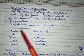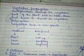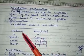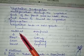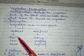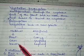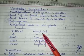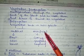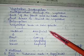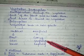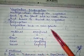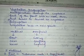Vegetative propagation is of two methods — natural method and artificial method. Under the natural method, vegetative propagation takes place in nature with the help of roots, stem, and leaves. In artificial vegetative propagation, human activity is involved. Humans carry out vegetative propagation through the processes of cutting, grafting, and layering. We are going to study both these methods in detail.